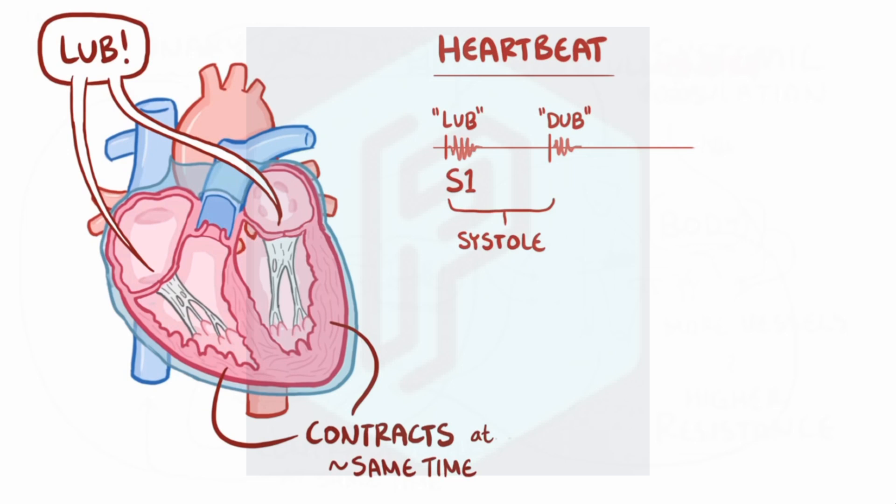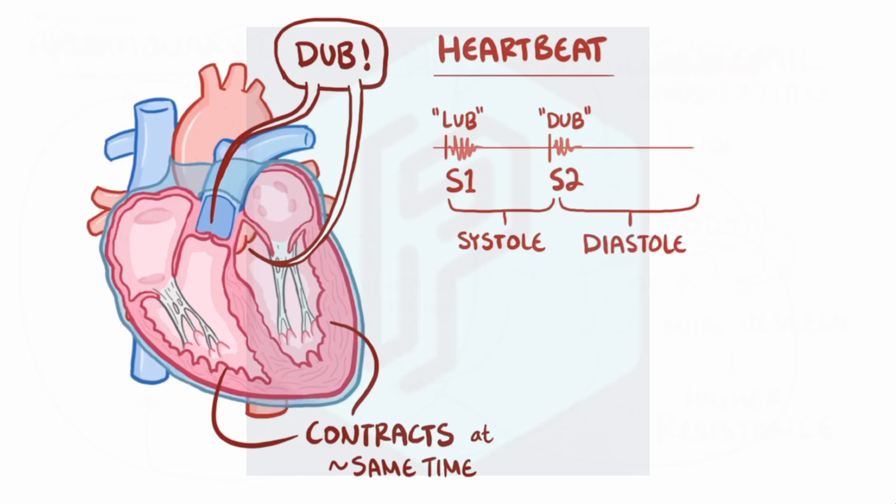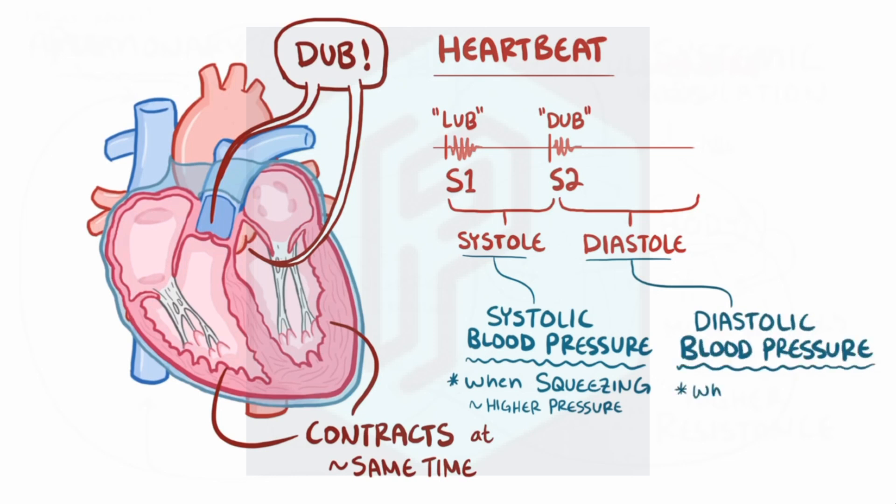The second heart sound, dub, is called S2, and the noise comes from the aortic and pulmonic valves snapping shut to prevent blood from flowing backwards after it leaves the ventricles, effectively ending systole. Right after the S2 sound, the tricuspid and mitral valves open back up, allowing blood to fill up the ventricles again, and this period of time is called diastole. And that's it! Each heartbeat can be broken into systole and diastole. So systolic blood pressure is the pressure in the arteries when the ventricles are squeezing out blood under high pressure, and diastolic blood pressure is when the ventricles are filling up with more blood, so it's going to be slightly lower pressure.